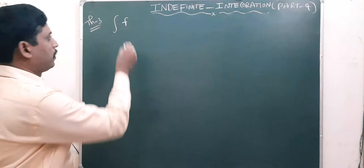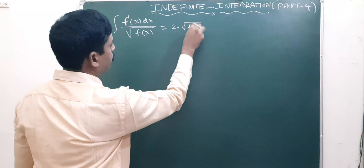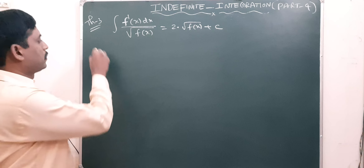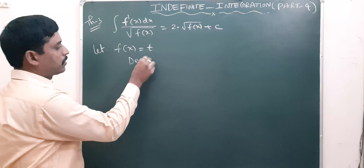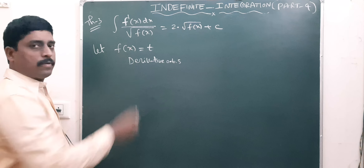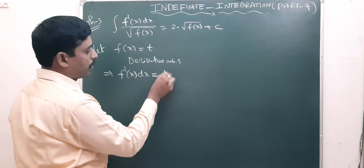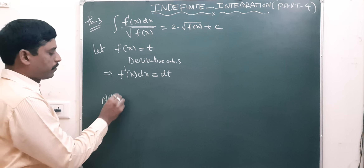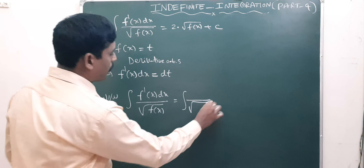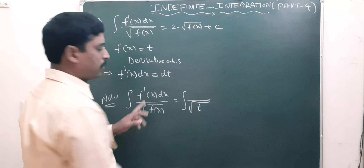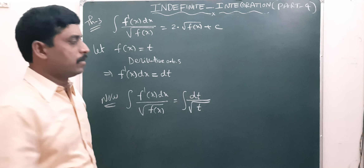So now let us explain theorem number 3: integral of f'(x) dx by root of f(x), this is equal to 2 root f(x) plus c. By using substitution method, let f(x) equal to t. Derivative on both sides: derivative of f(x) gives f'(x), and f'(x) dx equals dt. So integral of f'(x) dx by root f(x) becomes integral of dt by root t.